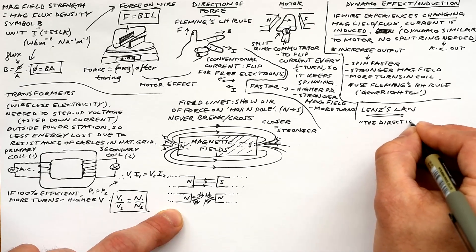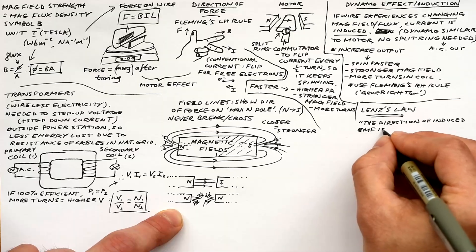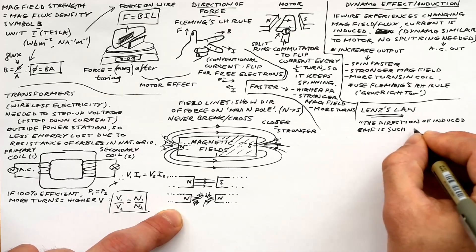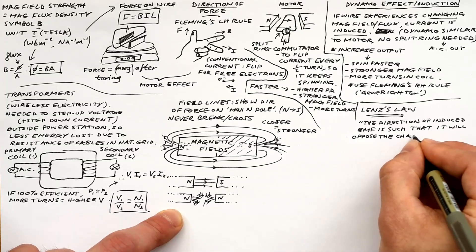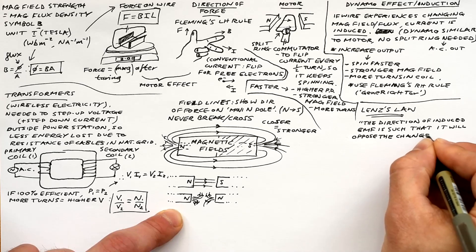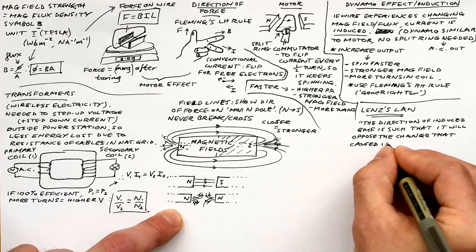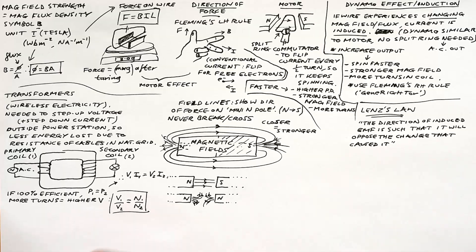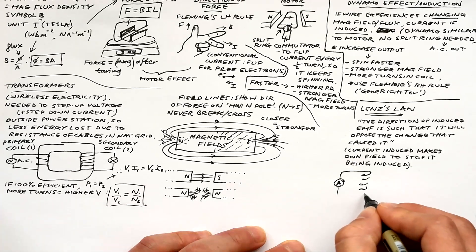Let's look at Lenz's law. You need to know this back to front. The direction of induced EMF is such that it will oppose the change that caused it. That's the definition. In other words, if a current is induced, it will make its own field that will try to stop the change that actually caused it to begin with. Currents don't like being induced.